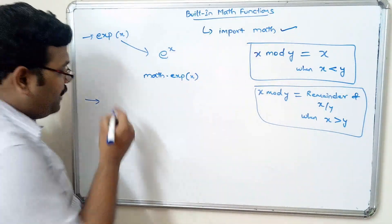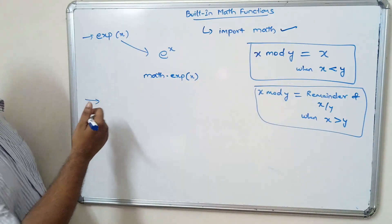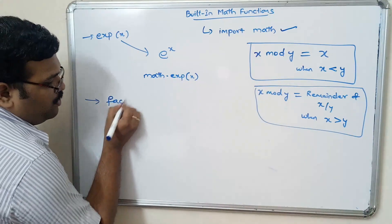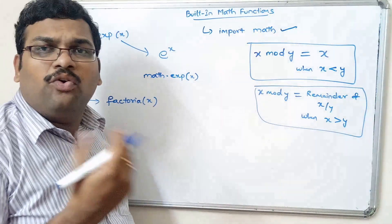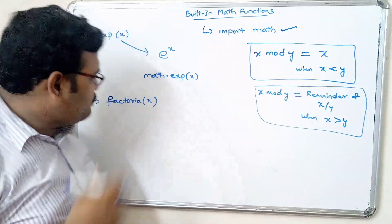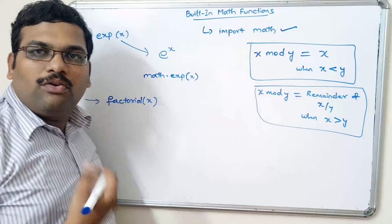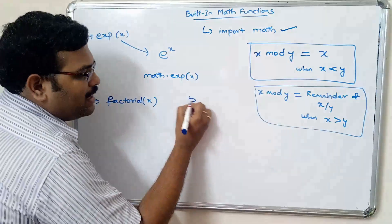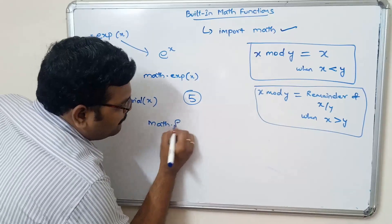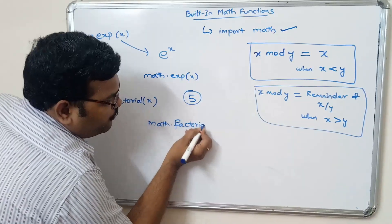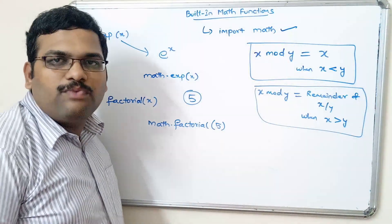Similar to this, we also have factorial. Factorial(x) — we need not write any code for finding the factorial; just by using this built-in function we can get the factorial of a given number. If you want to get 5 factorial, simply write math.factorial(5), which will directly return the result.